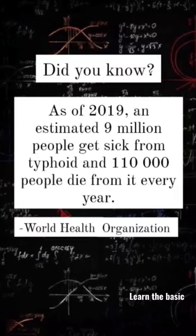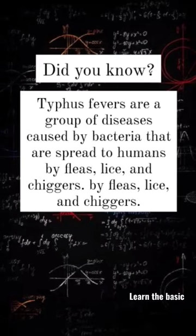As of 2019, an estimated 9 million people get sick from typhoid and 110,000 people die from it every year. Typhus fevers are a group of diseases caused by bacteria that are spread to humans by fleas, lice, and chiggers.